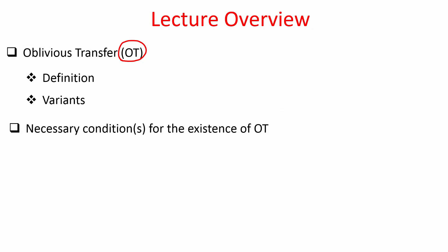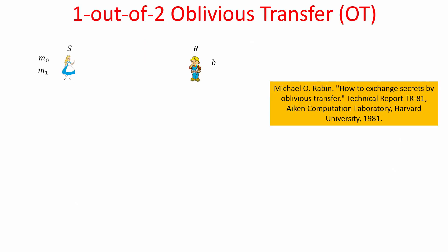Not only that, oblivious transfer is used in varieties of other cryptographic applications. We would not be going into all the applications of oblivious transfer — it is in itself a very important cryptographic primitive and has been widely studied. In this lecture we will see the various variants and definitions of oblivious transfer and what are the necessary conditions required for the existence of OT protocols.